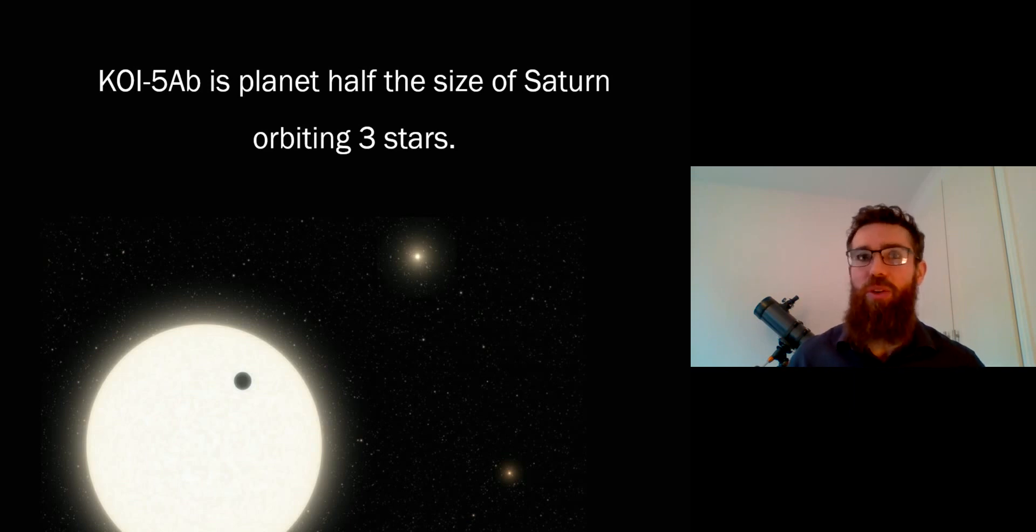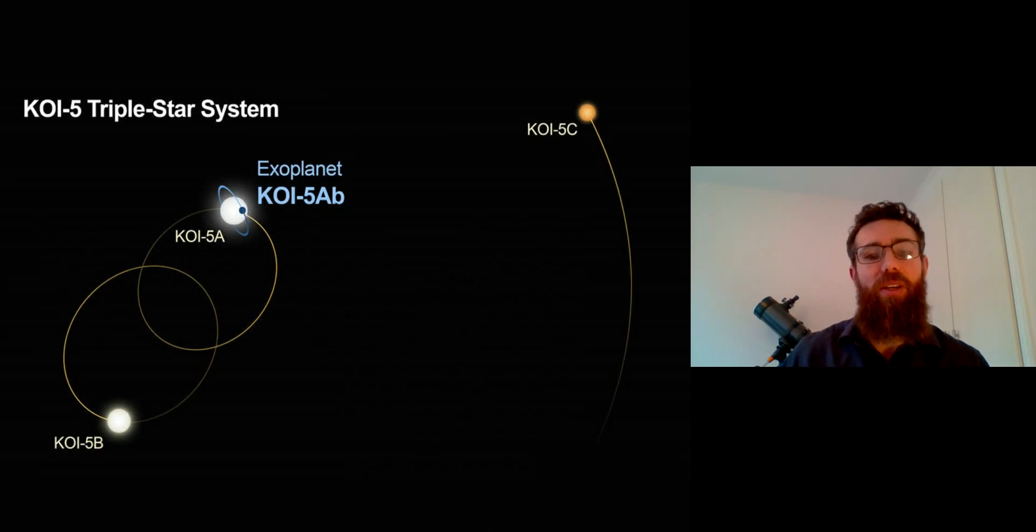So what does it actually look like? What's the configuration there? What does its orbit actually look like? Well, the exoplanet itself, 5Ab, is orbiting the star 5A.